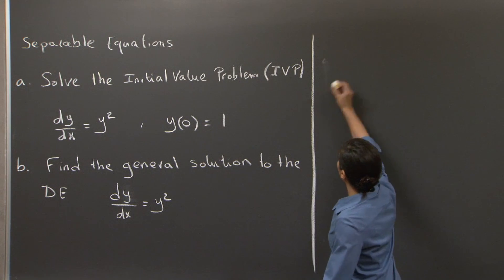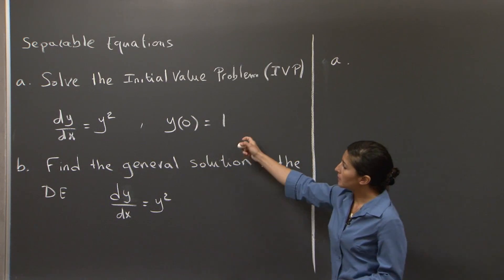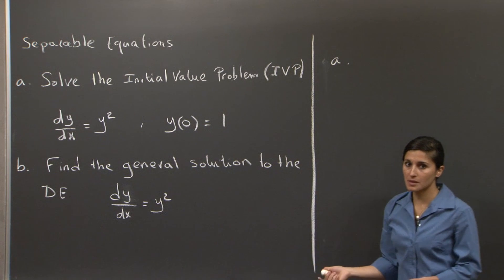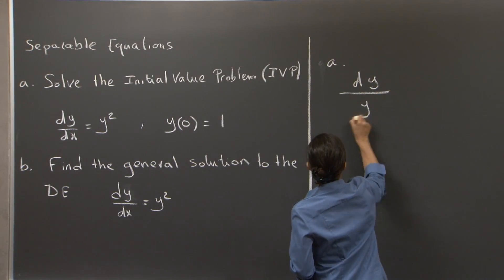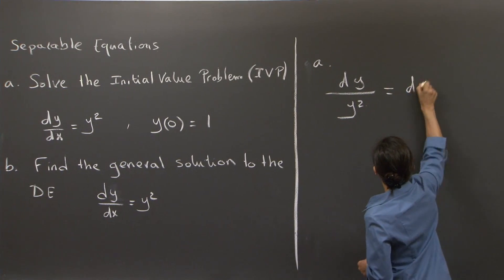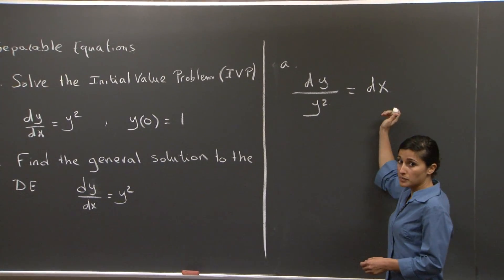Welcome back. So in the first part of the problem, we'll be solving the equation dy/dx equals y squared. The method of separation of variables tells us that we should regroup the variables of the same kind, so all the y variables on one side and dx variable on the other side of the equation, and then integrate from this point.